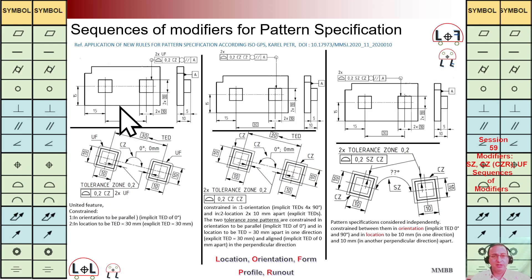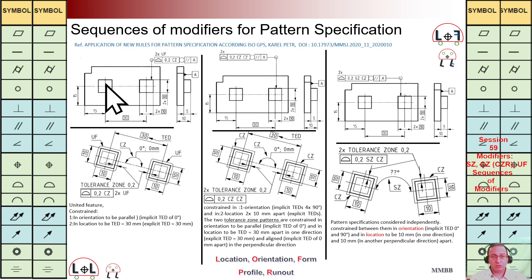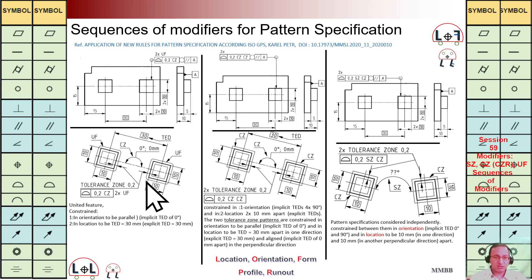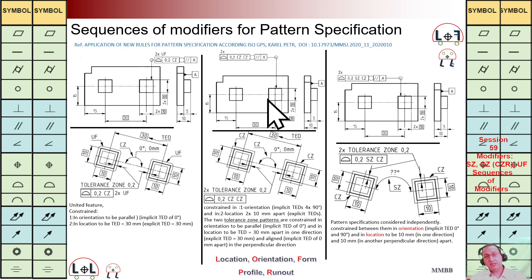In the last example we have two holes with TZ 0.2 and CZ, all around, parallel to datum A. For each cross-section parallel to A we have a combined zone for those two holes. Because it is CZ, the tolerance zone rolls around the combined feature — that is why we get round corners. The angle is 0 or 180 and we have the TZ for this united feature.